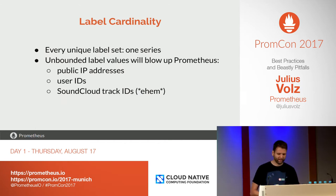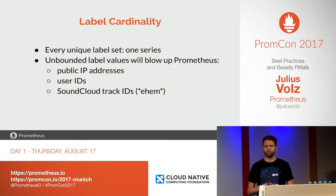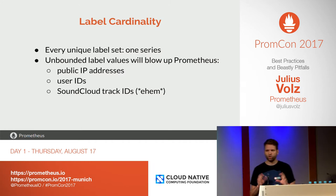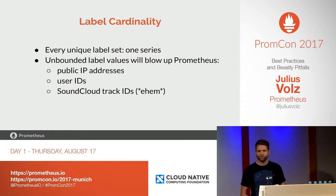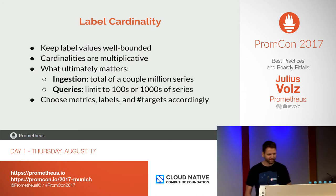Label cardinality — this is obvious but something that still happens to everyone who starts using Prometheus for the first time. They end up putting something in the label value that they shouldn't. Keep in mind that every unique set of labels creates one new time series, and Prometheus has a limited number of time series it can track at any given time. It's not a log-based system — it tracks series. So don't put public IP addresses, user IDs, or SoundCloud track IDs into a label value, because otherwise your Prometheus will immediately blow up — potentially creating millions or billions of series.